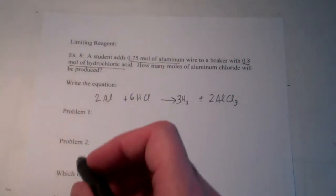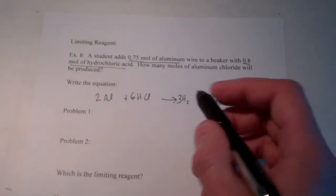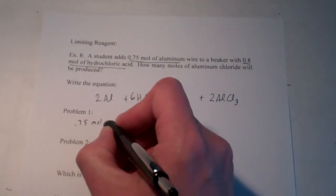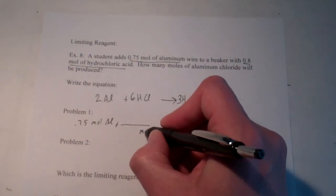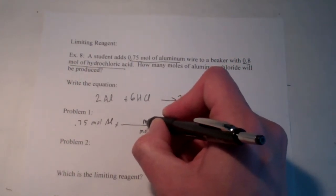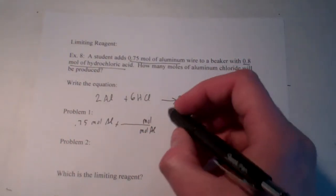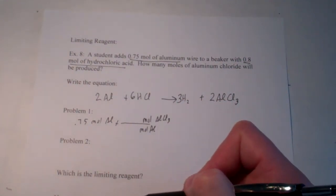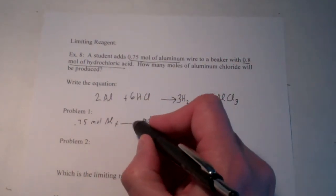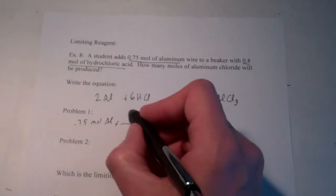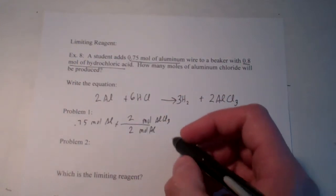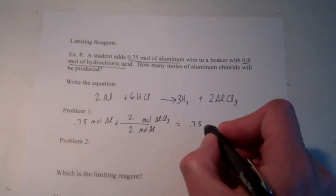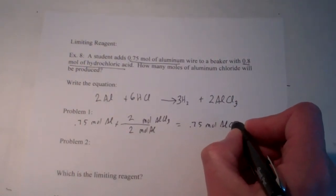Let's do it first for aluminum to find out how much aluminum chloride I can produce. Starting with 0.75 moles of aluminum, we go from moles of aluminum to moles of product — in this case aluminum chloride. This ratio comes from the balanced equation: two aluminums can produce two aluminum chlorides. So with this reactant I can make 0.75 moles of aluminum chloride.